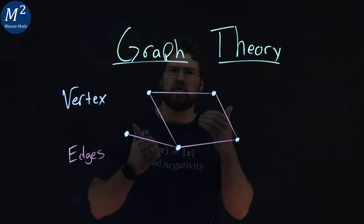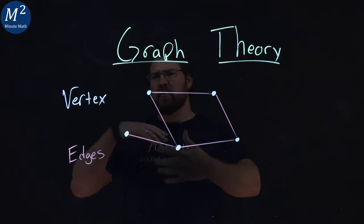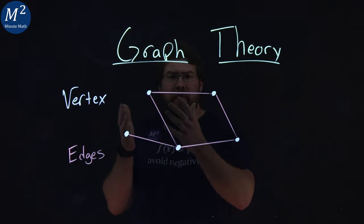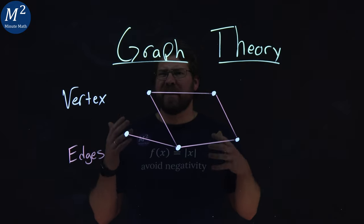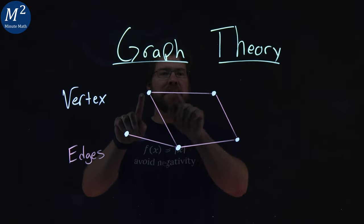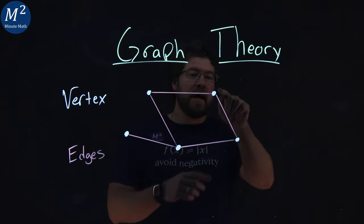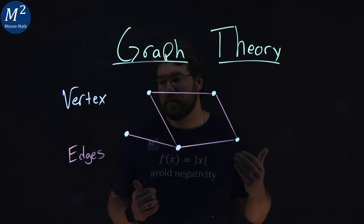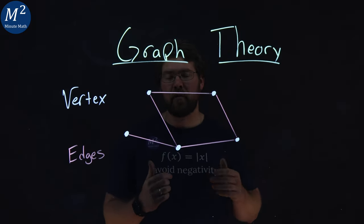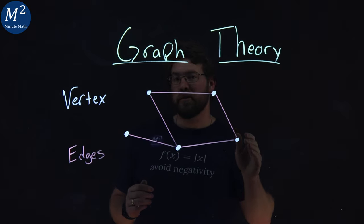We can translate this into some real-world problems where the vertices can, well, essentially be like a location, and they're noted by these dots. To connect two locations, we have edges. It's like a path. You get from one place to another.